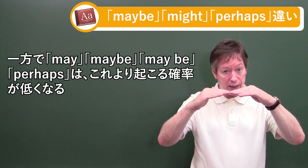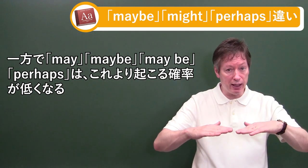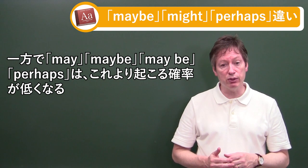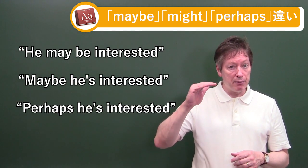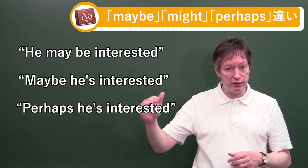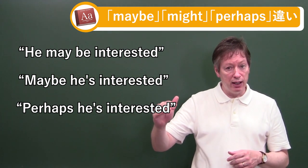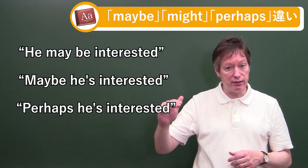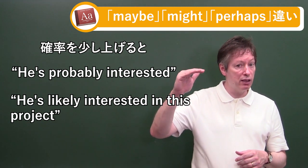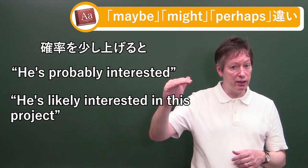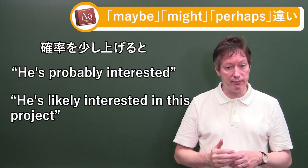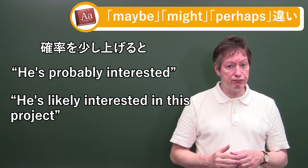Whereas maybe and may be and perhaps is going to be lower than that. So I'll say he may be interested. And I'll say maybe he's interested. Perhaps he's interested. Perhaps he's interested. And I'm going to raise the bar. He's probably interested. He's likely interested in this project.